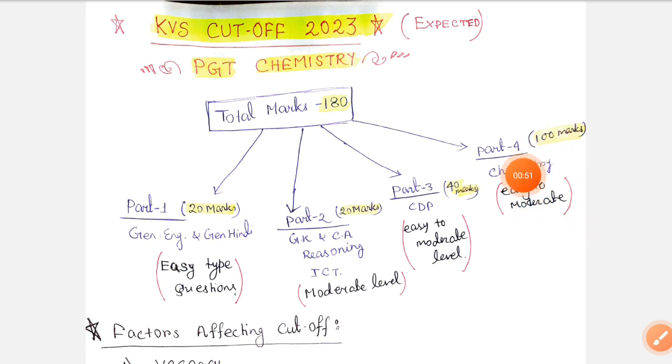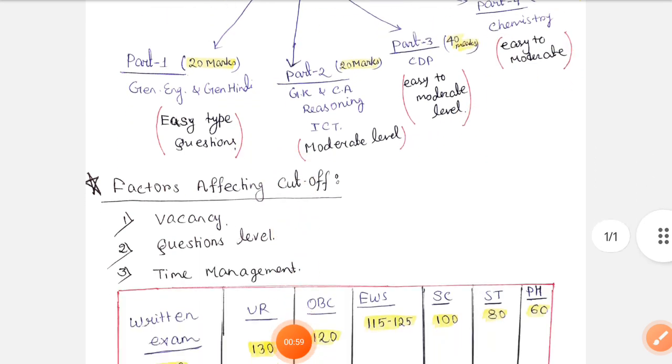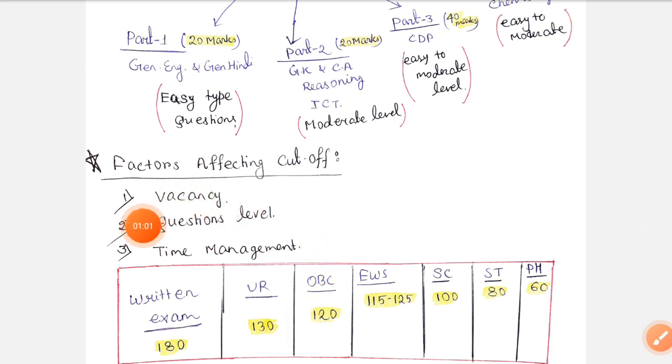So we can say that is moderate. If we include all these factors, then the cutoff is affected by factors like vacancy, total vacancy, questions level, and time management also.